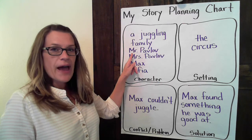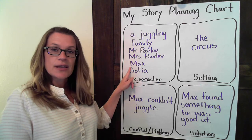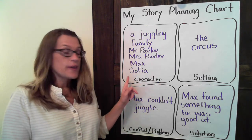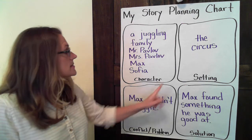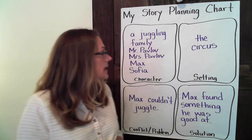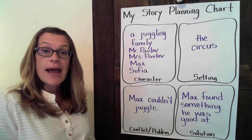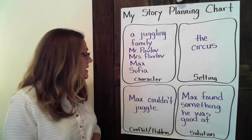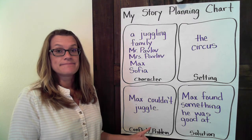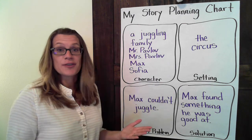I have Mr. Pavlov, Mrs. Pavlov, their son Max who's going to be my main character, and his sister Sophia. The setting is going to be the circus — it's going to take place at the circus. My problem: well, Max is my main character, so he's the one who has the problem. Max couldn't juggle, which is a big deal when you come from a family of all jugglers. That's their job.